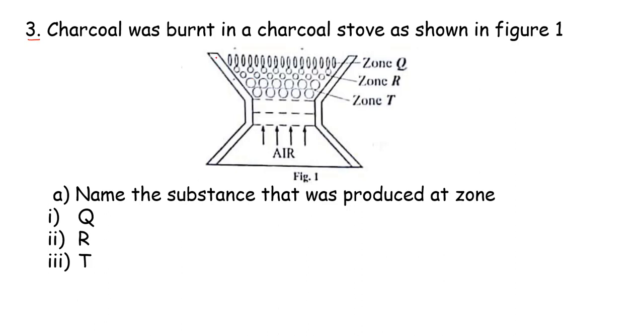For this question, you should be able to tell that here we're having our charcoal stove and this is our charcoal. Here we have air coming into our charcoal stove from the base. So the question says name the substance that was produced at zone Q, R and T.